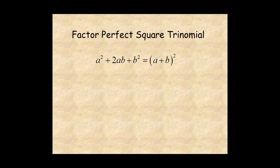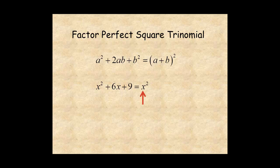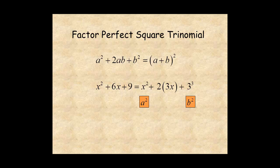You can turn this around and factor perfect square trinomials. If the first and last terms of a trinomial are perfect squares, it might be a perfect square trinomial. To find out, rewrite the first term as a square, factor 2 from the second term, and rewrite the third term as a square. Now you can see the trinomial matches the pattern — here's a squared, here's b squared, and here's 2ab. So a plus b has to be x plus 3, and the trinomial factors as x plus 3 squared.